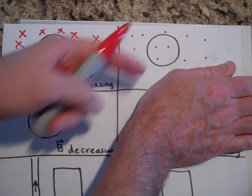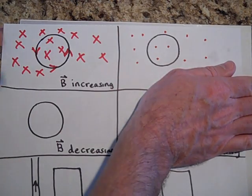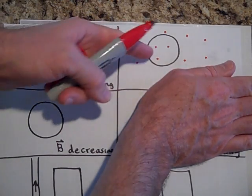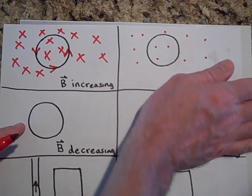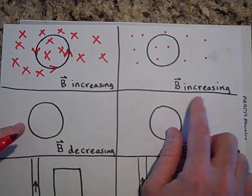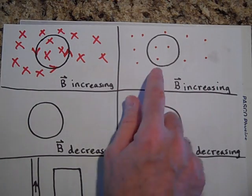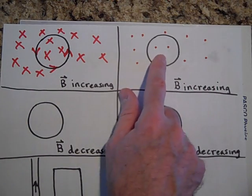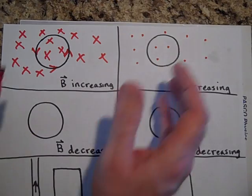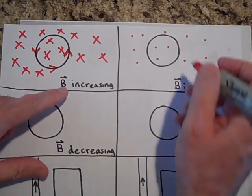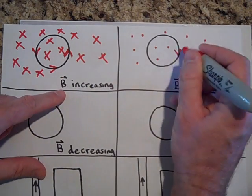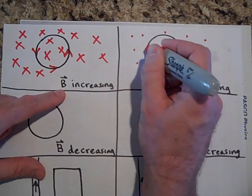If there's just a B field and it's not changing at all, the hoop is perfectly happy. But as soon as I tell you it's increasing, it's going to try to make x's. To make x's, the current is going to go this way. That's Lenz's law.